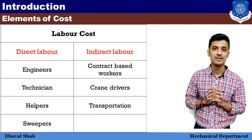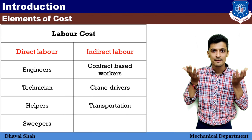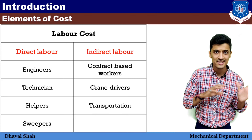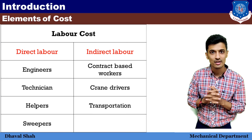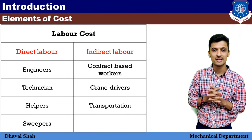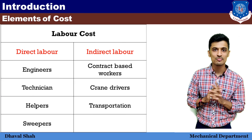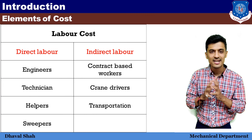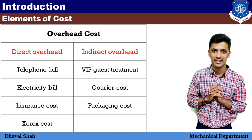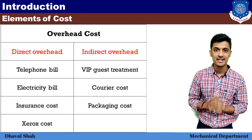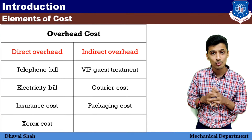Toh jo worker hamare yahan permanent kaam kar raha hai — jaise ki engineers hain, manager hain, sweeper hain — jo hamare yahan permanent kaam kar raha hai usko hum direct labor ginenge. Jo worker hamare yahan contract pe aate hain — matlab kai baar kya hota hai ki hamaara business itna badh jaata hai ki hume 2-3 naye workers ki zaroorat padti hai — toh contract pe worker ko bula lete hain. Toh woh jo workers hain usko hume paisa toh dena hi padega, but woh paisa humne pehle estimate mein nahi gina tha, toh woh indirect labor mein chali gayi. Jo contract pe labor hai woh sab indirect labor mein aa jayenge.